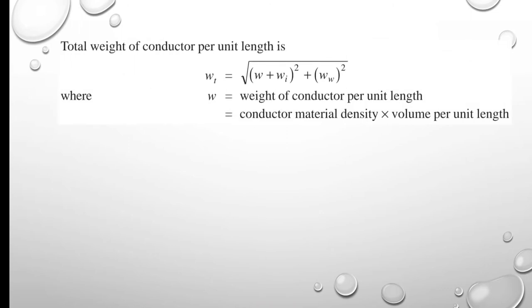The total weight of the conductor per unit length is Wt = √[(W + Wi)² + Ww²], where W is the weight of the conductor per unit length, equal to conductor material density times volume per unit length.